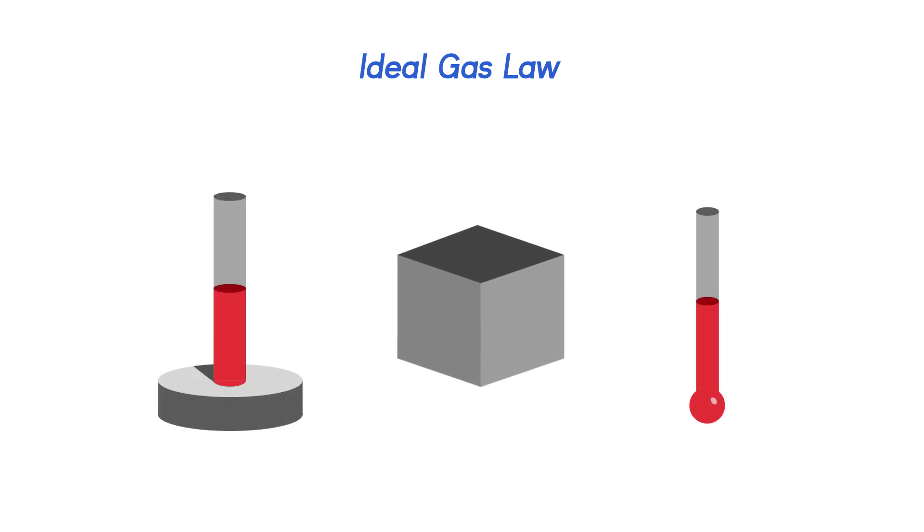If you remember back to high school chemistry, at some point you probably encountered the ideal gas law, which shows the relationship between the volume, temperature, and pressure of an ideal gas. It demonstrates that as a gas is cooled, its pressure increases and it becomes more dense, whereas a gas that is warmed will expand and become less dense.